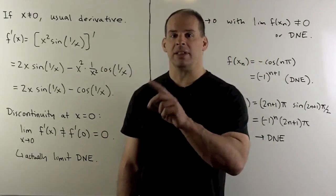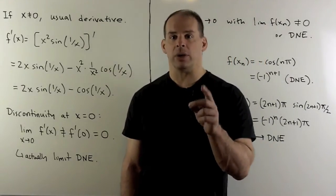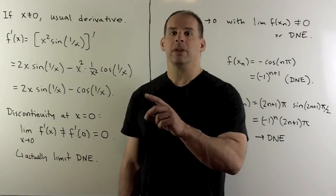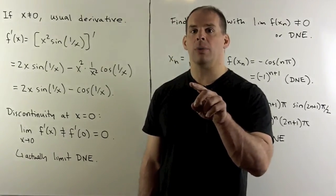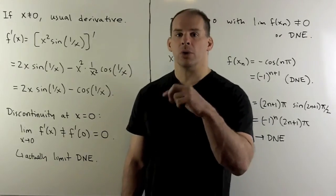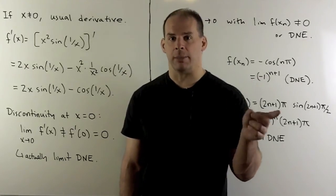Now, if we assume that that limit did exist, or even that we had continuity, then if I put any sequence that converges to 0 into the function, those values have to converge to the limit.